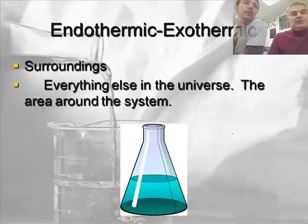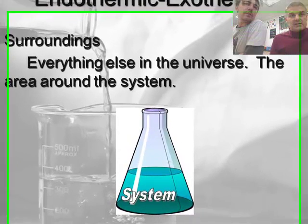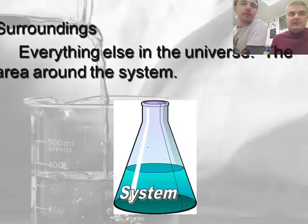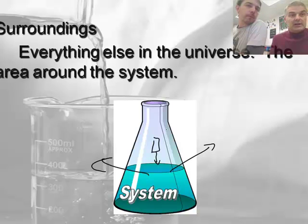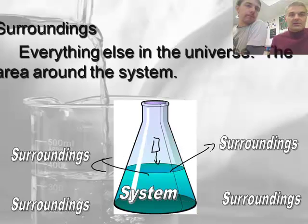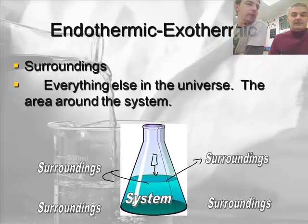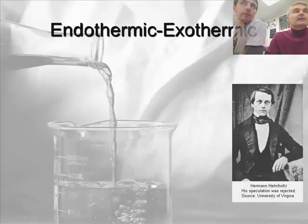The surroundings is everything else. You define the system, everything else is surroundings. So if we were to think of this particular flask, where a reaction would take place, and I added something to this — some chemical, maybe a piece of magnesium or something like that — this would be the system, and the surroundings would be everything outside it. This would heat up, possibly, or cool down. So the surroundings are the things on the outside, and together, the system plus the surroundings equals the universe.